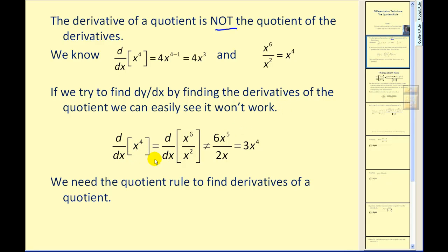We know that x to the fourth is equal to x to the sixth divided by x to the second. So can we just find the derivative of the numerator, the derivative of the denominator, and simplify? We see here that it doesn't work. This shows the derivative would be three x to the fourth, but in fact we know it's actually four x to the third. So we cannot just find the quotient of the derivatives.